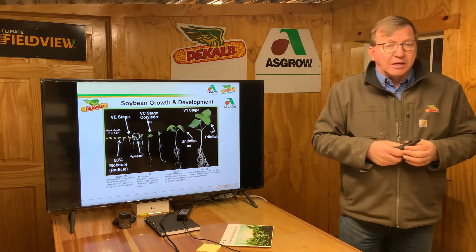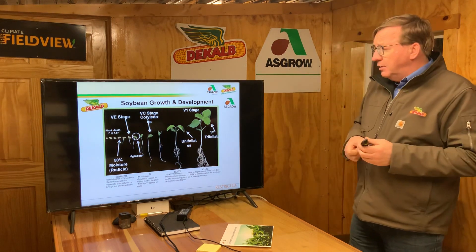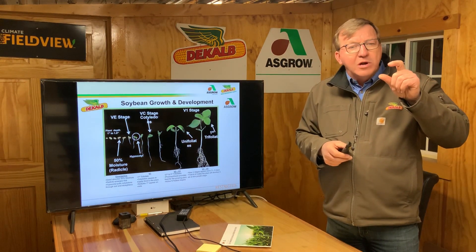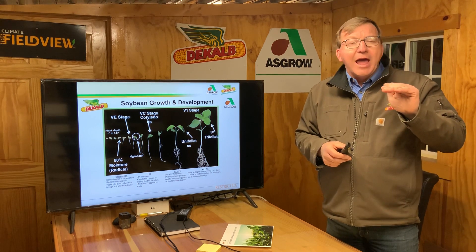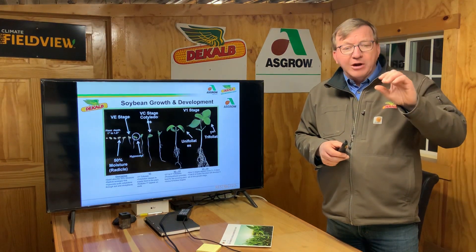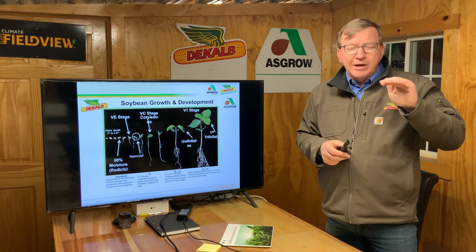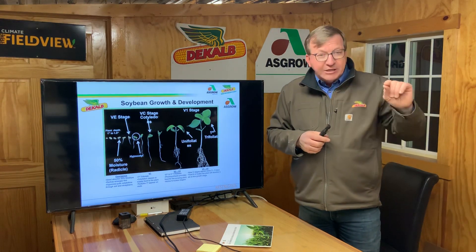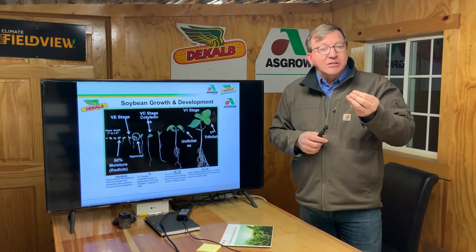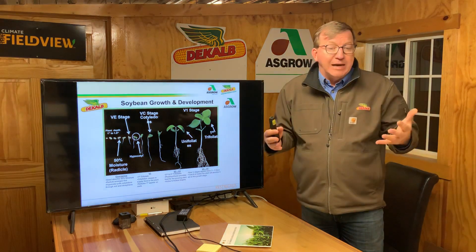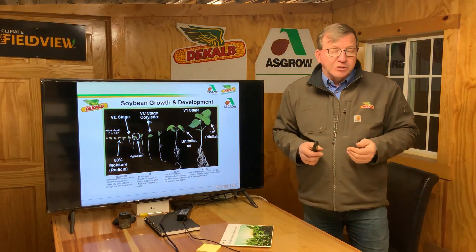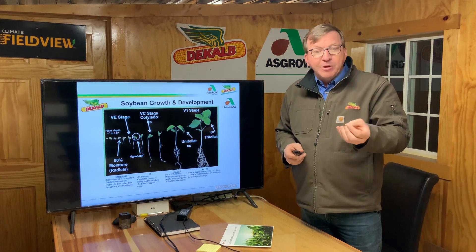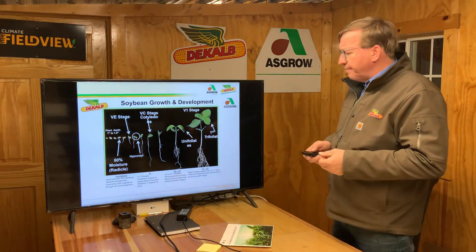Let's move into soybeans and talk about beans a little bit — an awesome crop too. Planting soybeans at about one to one and a quarter inch depth is ideal; I would go down to an inch and a half if it was a little bit drier conditions. The same thing with soybeans — we want moisture and even uniformity and good seed-to-soil contact to give us the best, quickest growth and development and get us to emergence. Soybeans need to imbibe about 50% of their weight in moisture to get going.